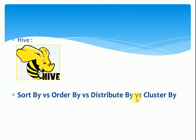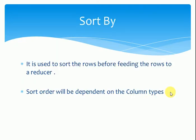Many people are confused about SORT BY, ORDER BY, DISTRIBUTE BY, and CLUSTER BY in Hive. We'll go through the major differences between these. First, SORT BY: Hive uses the columns in SORT BY to sort the rows before feeding them to a reducer. The sort order depends on the column type — if the column is a numeric type, then the sort order is also numeric.